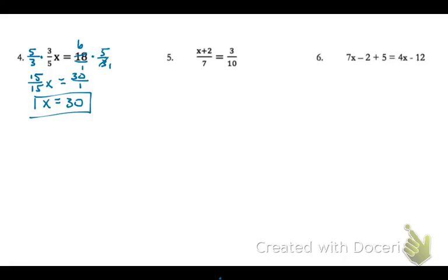Number 5, notice that this is a proportion. It's two fractions set equal to each other. So I can use cross products or cross multiplying. So I'll take the numerator of my fraction on the left and multiply it by my denominator on the right. I'm going to place my 10 out front. Since my numerator is an expression, I'm going to put it together in a parenthesis.